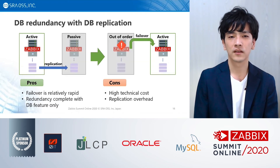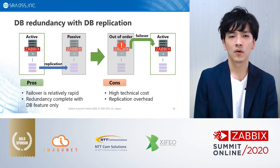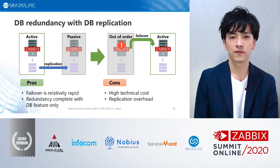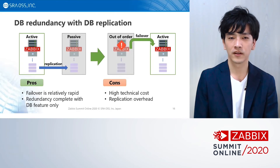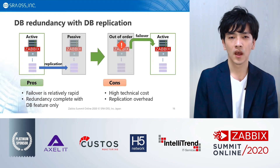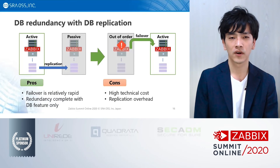Next is the database replication method. With this method, you make the database redundant via the database replication feature. This method can failover relatively rapidly and achieve complete redundancy using only database features. But high technical cost and replication overhead are required.